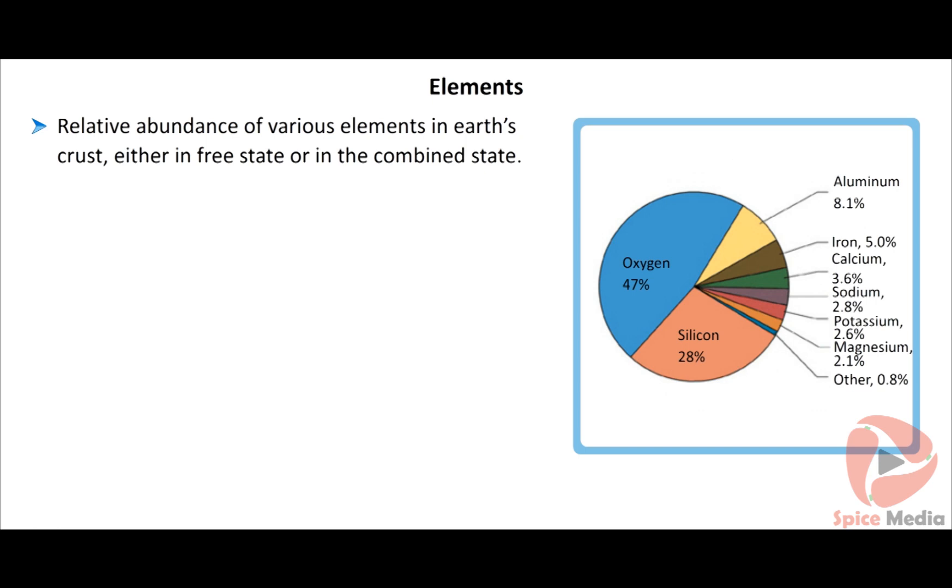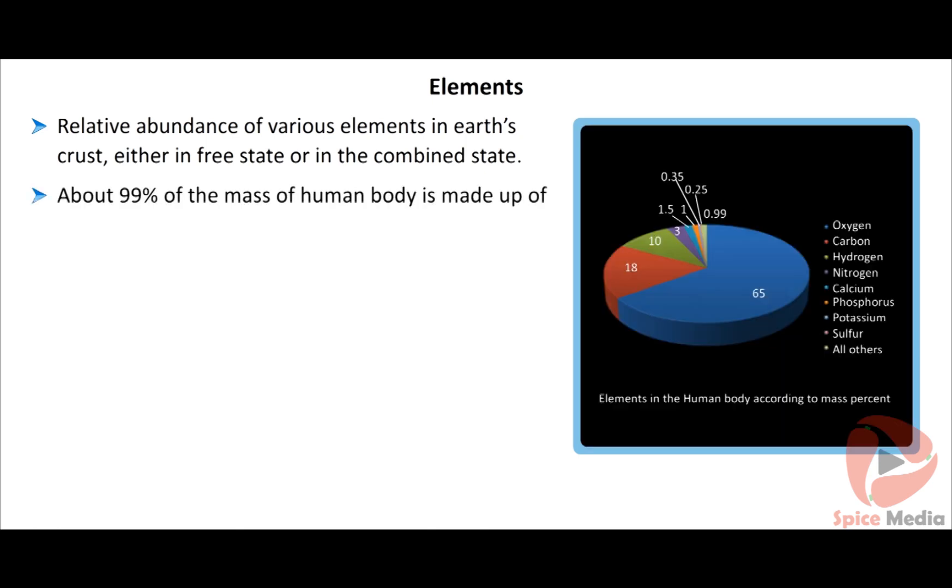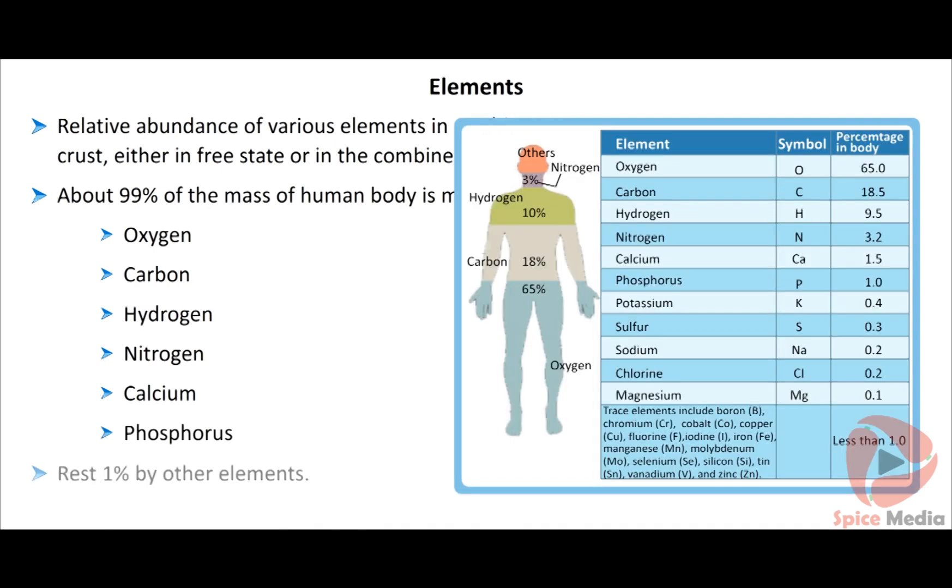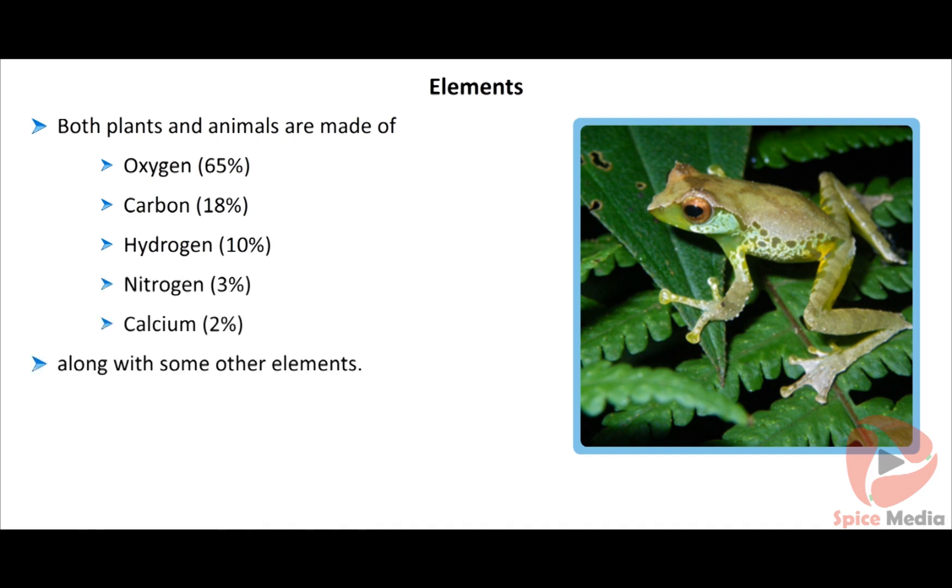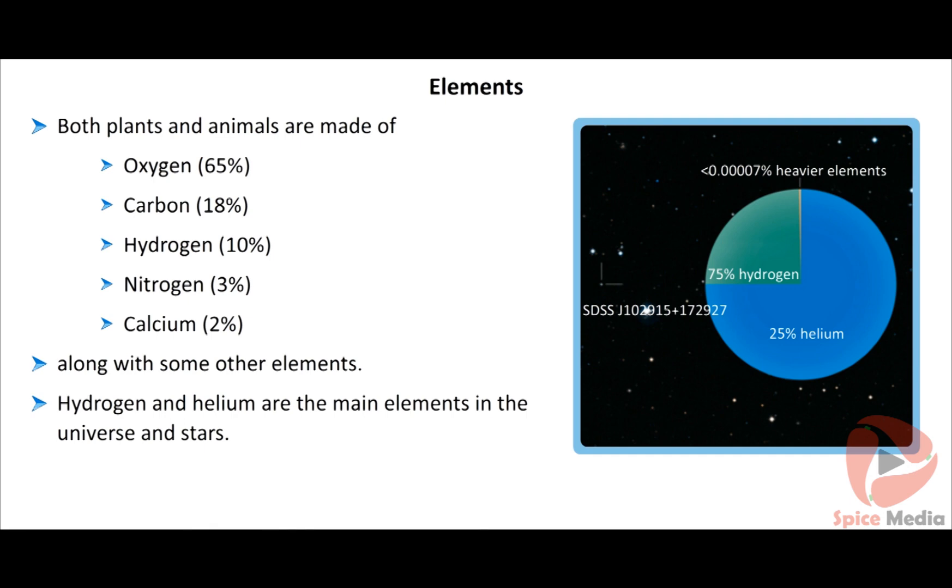About 99% of the mass of human body is made up of six elements. They are oxygen, carbon, hydrogen, nitrogen, calcium and phosphorus, and the rest 1% by other elements. Both plants and animals are made up of oxygen 65%, carbon 18%, hydrogen 10%, nitrogen 3%, calcium 2% along with some other elements. Hydrogen and helium are the main elements in the universe and stars.